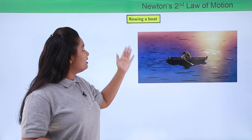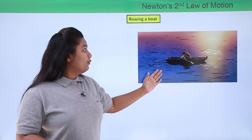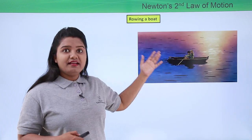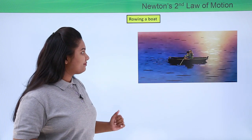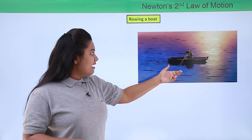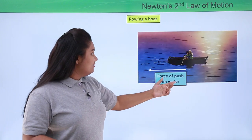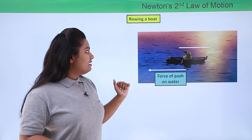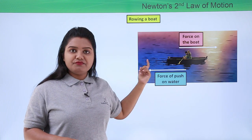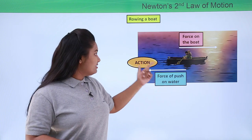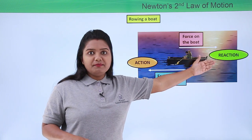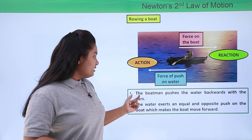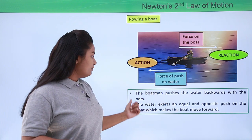The next application of Newton's third law is the rowing of a boat. Whenever we row a boat, we push the water in the backward direction, and that makes the boat move in the forward direction. The force that the oars exert onto the water is in the backward direction, and as a reaction the boat moves forward in the opposite direction. The boatman pushes the water backwards with the oars, and the water exerts an equal and opposite push on the boat, making it move forward.